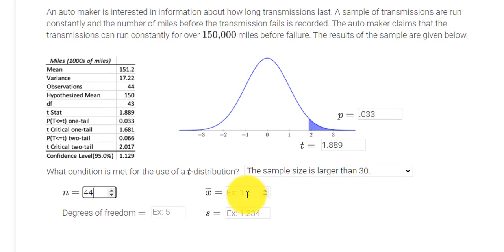The mean X bar is 151.2. And the degrees of freedom would be, wait a minute, N minus one, 43. Degrees of freedom is N minus one.